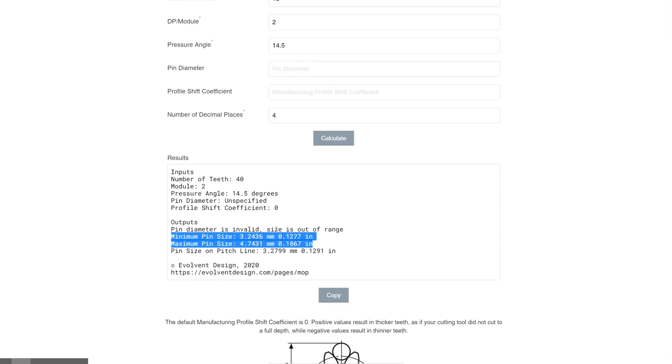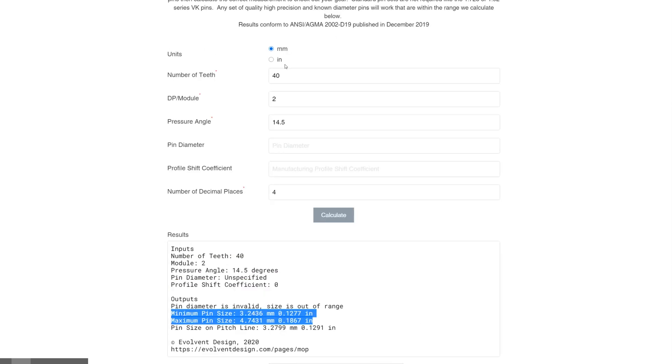So you need to go to your pin collection, choose a pin in this range, inch or metric, doesn't matter. And in this case we know on this one we've gone to our pin kit and our pin is 0.15 inches. But we started this calculator in millimeters so we'll convert that pin diameter to millimeters 3.81 and we'll recalculate.